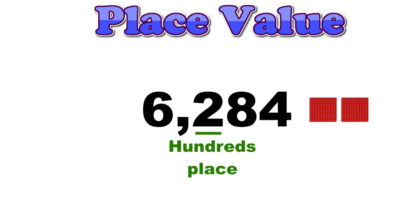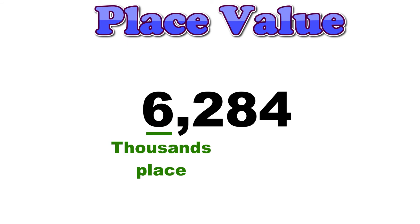Finally, the digit 6 is in the thousands place. Notice that a comma is used to separate the hundreds place from the thousands place. A six in the thousands place lets us know that this number has six groups of one thousand. Six groups of a thousand is also equal to six thousand, which looks like this.